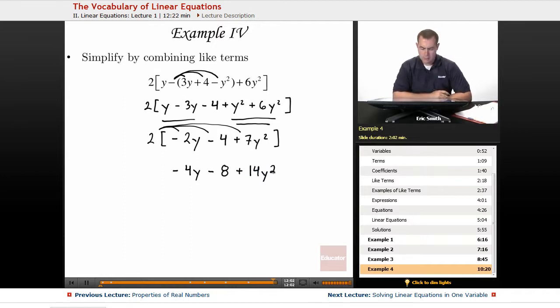Alright, so my final answer would be negative 4y minus 8 plus 14y squared. I wouldn't combine those any more together because none of those are like terms. I have a single y, I have an 8 that doesn't have any variables whatsoever, and I have that y squared.